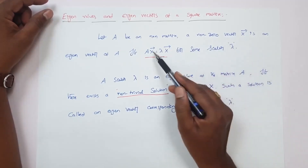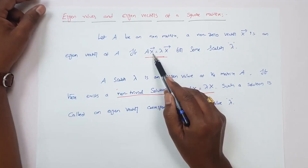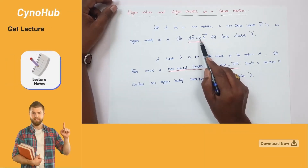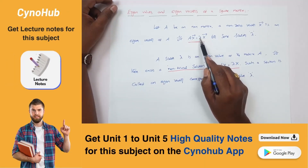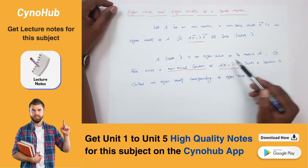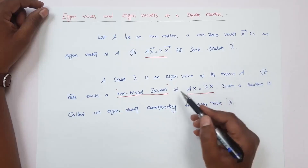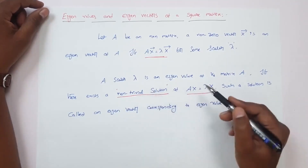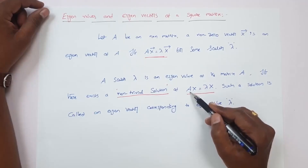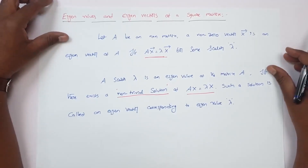If the given matrix A and vector X satisfy this equation, then X is called the eigenvector of the matrix A, and this scalar value is called the eigenvalue of the matrix A. This scalar may be a real number or complex number. A scalar lambda is an eigenvalue or characteristic value of matrix A if there exists a non-trivial solution — that is, a nonzero solution — of the system AX equals lambda X. Such a solution is called an eigenvector corresponding to the eigenvalue lambda.